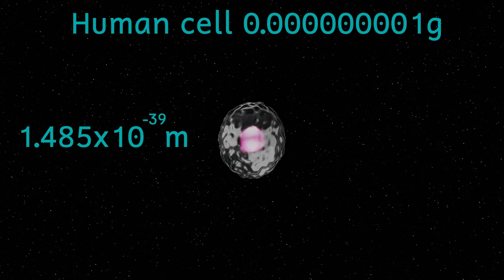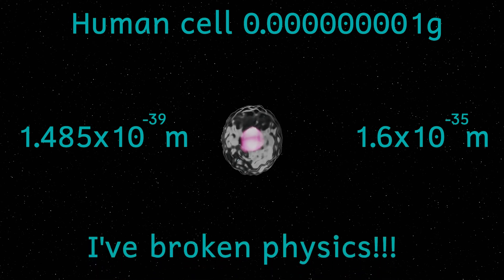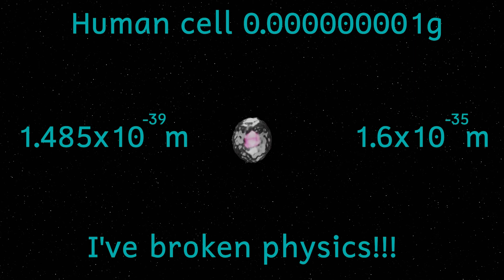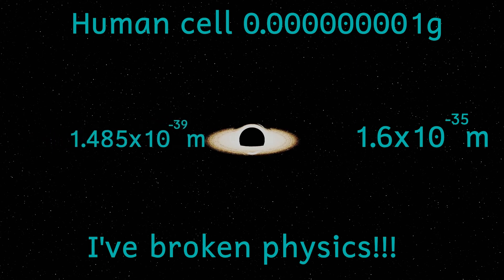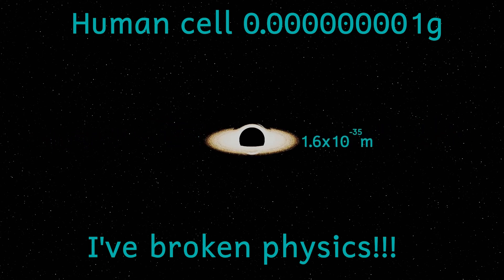If you've already watched my video on the Planck length, and if not go and watch it, you'll know that the smallest size that it's possible to get is 1.6 times 10 to the minus 35. So this Schwarzschild radius is about 10,000 times smaller than the Planck length. And there we have it. I've broken physics.